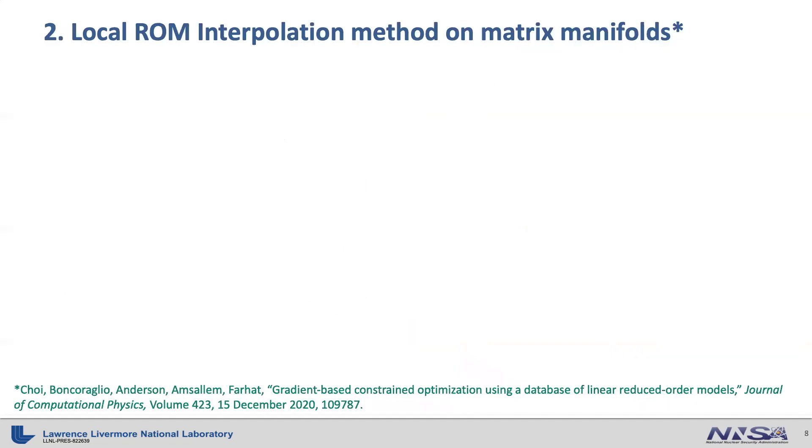The second method is to use local reduced order model interpolation method on matrix manifolds. This one is somewhat different from the first reduced order model method in that this second example has vivid offline and online phases. In the offline phase, you build a library of reduced order models, while in online phase, you simply use them without updates. This means that ROMs you build in the offline phase must be able to cover all the parameter changes that might happen during the optimization process. We achieve this by building a library of local reduced order models and interpolate them within a matrix manifold.